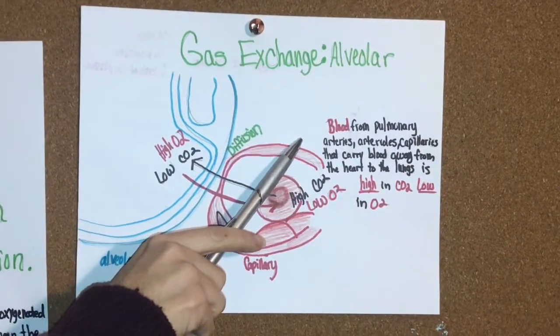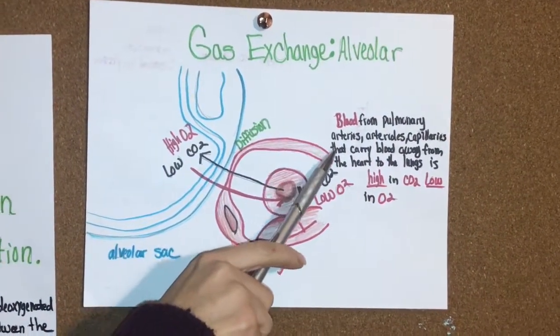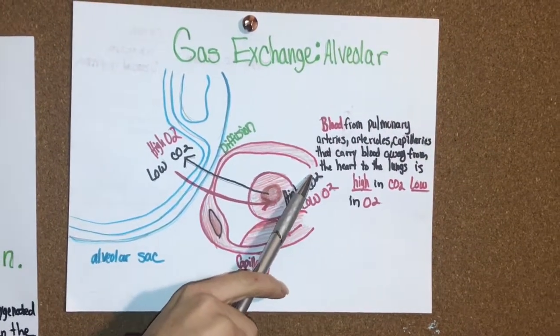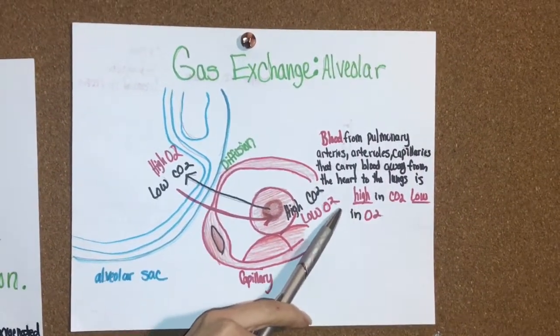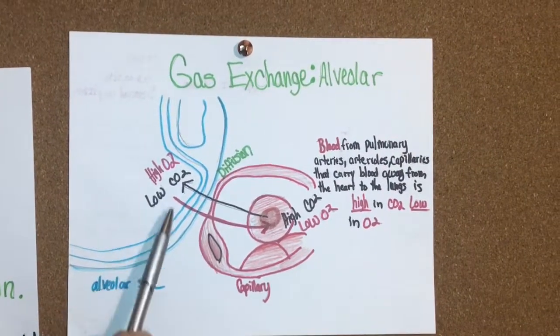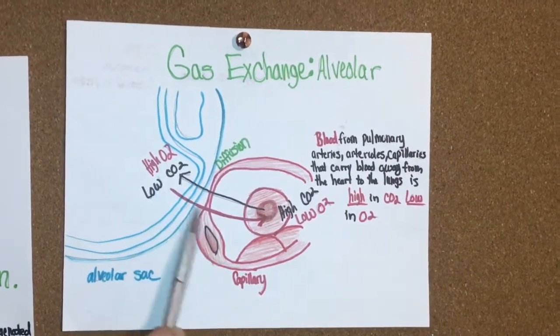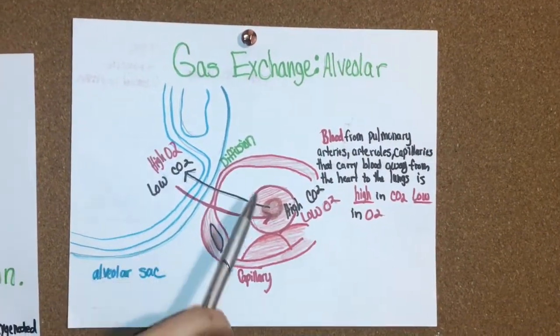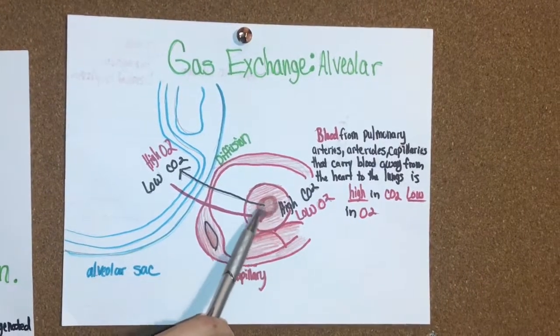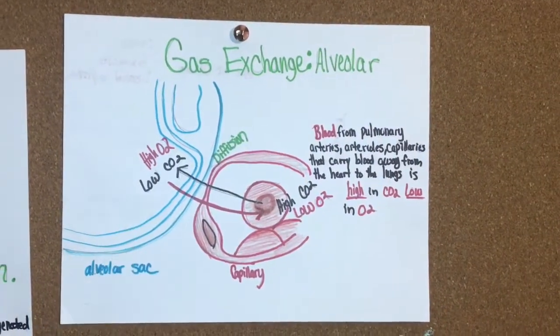Blood from the pulmonary arteries, the arterioles, and capillaries that carry blood away from the heart to the lung is going to be high in carbon dioxide and low in oxygen. The alveolar sac is going to be high in oxygen and low in carbon dioxide. So you can understand how this exchange happens with diffusion going from high concentration to low, and then from high concentration in carbon dioxide here to low concentration in the alveolar.